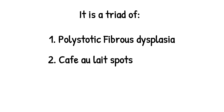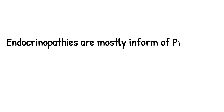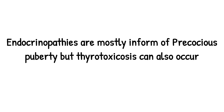There are hyperpigmented spots around the corners of the mouth, face, and body. There will be endocrinopathies — the endocrinopathies can be any, but the most prevalent in McCune-Albright syndrome is precocious puberty. Thyrotoxicosis can also be present.